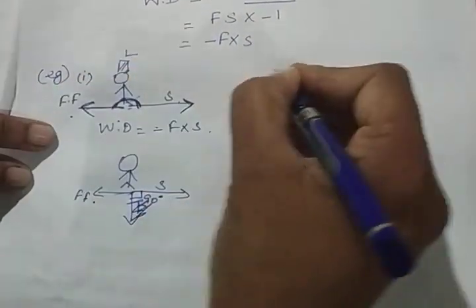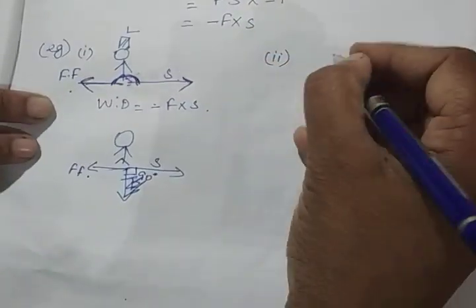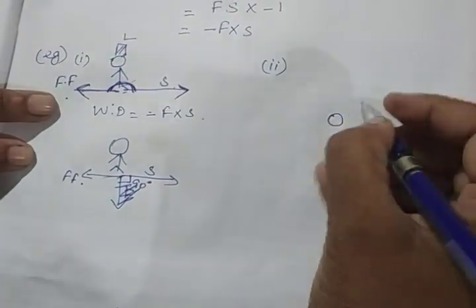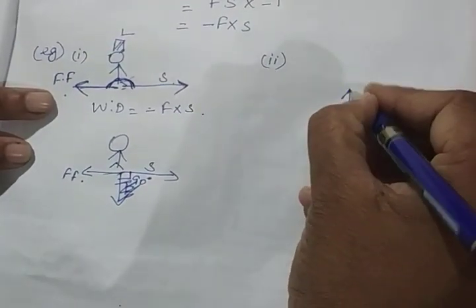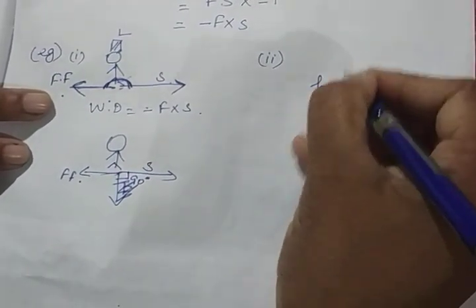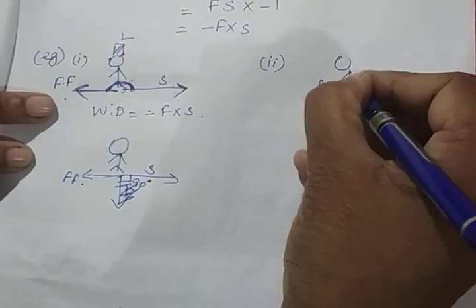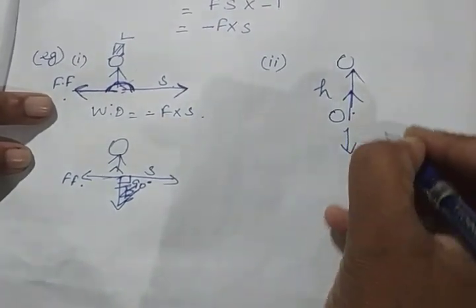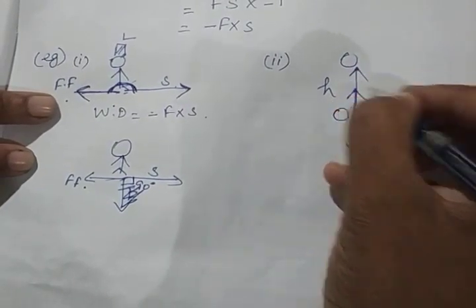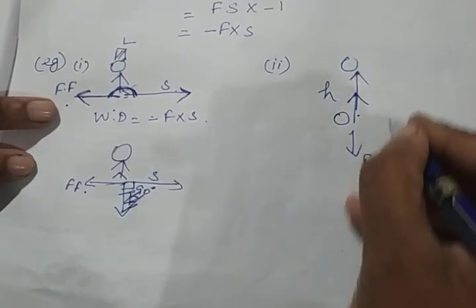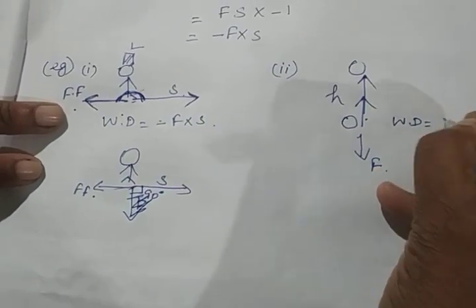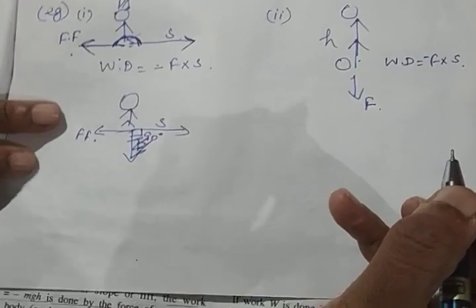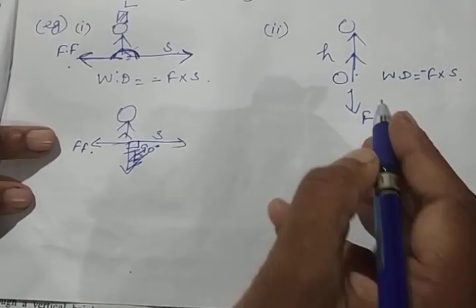Another example of negative work: when I am throwing a ball upward through a height H, the force of gravity acts downward while the displacement is upward. So the angle between force and displacement is 180 degrees — this is also an example of negative work done, giving minus F into S.